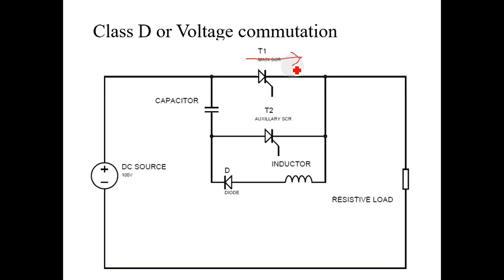That's why if we are having DC voltage or DC source as input to the SCR, SCR requires the commutation circuit or turn off circuit.